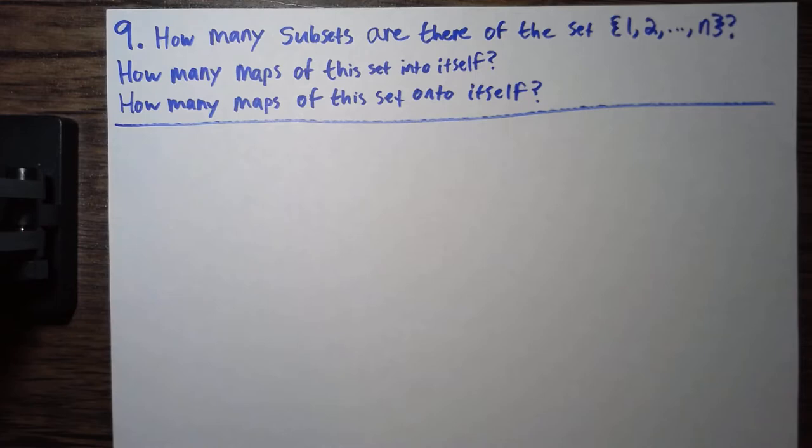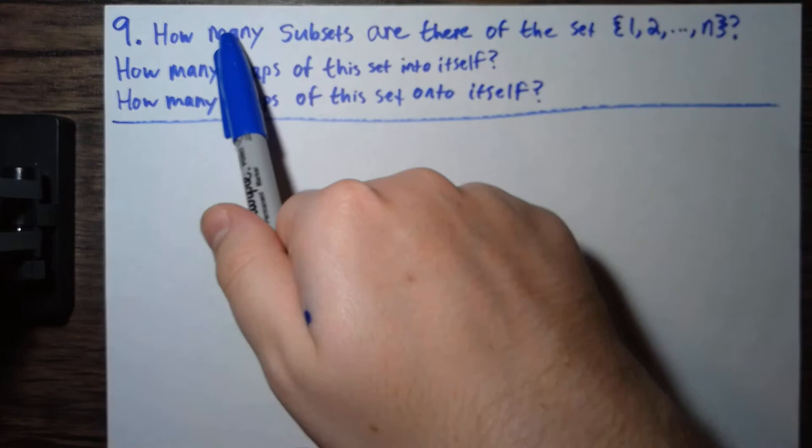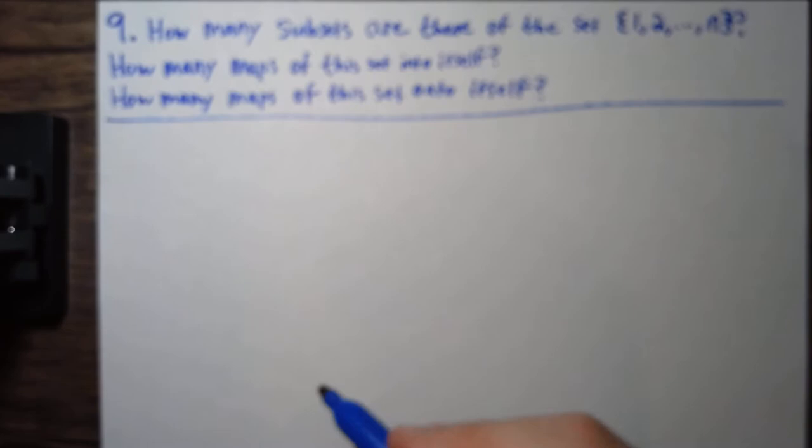Alright, we're going to do problem 9 from chapter 1 of Rosen-Lynch's Introduction to Analysis. There are kind of three questions here. So, how many subsets are there of the set 1, 2, all the way to n? And the answer to this is going to be 2 to the n.